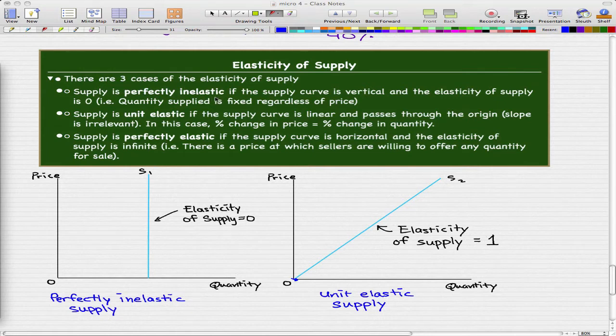The first case is supply is perfectly inelastic. This is the case if the supply curve is vertical and the elasticity of supply is zero. That is, when quantity supplied is fixed regardless of price. So no matter how much the price changes, the providers still provide the same amount of quantity. And this is the graph that illustrates the perfectly inelastic supply.